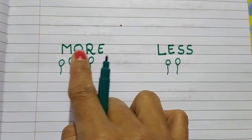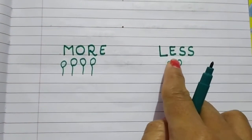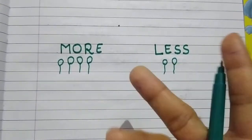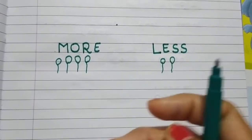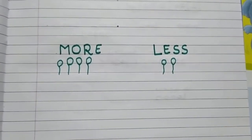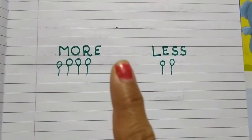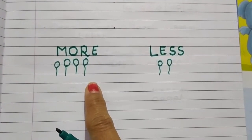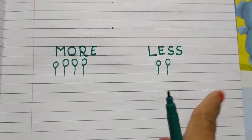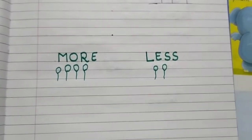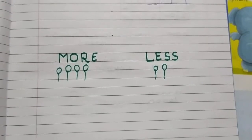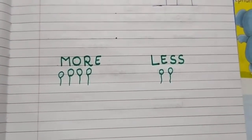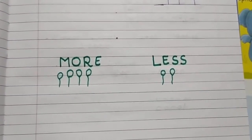More and less. Children, when we have two objects with different quantities, one is more in quantity and the other is less. So let us now understand with the help of some examples.